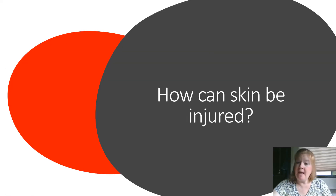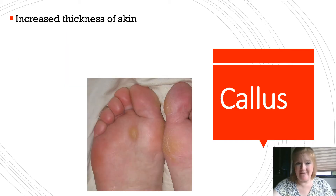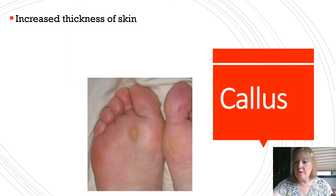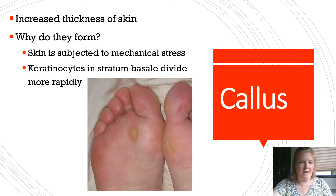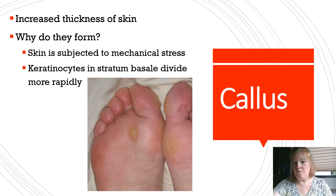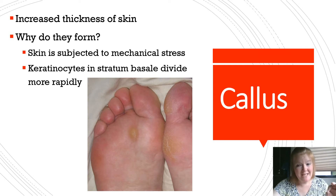How can your skin be injured? One way is from a callus — it's an increased thickness of skin. Why do they form? Your skin may be subjected to mechanical stress, so the keratinocytes in the stratum basale divide more rapidly to provide thickened skin for more protection.